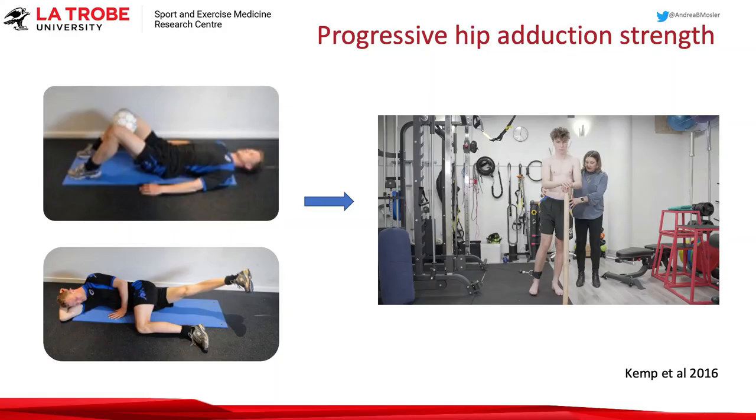Then quickly progressing on to isotonic type actions. It's surprisingly hard to lift your leg against gravity in sidelying, so often you'll find this will be enough load in the early stages. But it's really easy to add an ankle weight. A little tip and trick: if they've got a long sock and they don't have one of those sand-based ankle weights, just put a dumbbell in the sock and you can progress really nicely through the weight. That gives it a long lever, so it's actually quite hard — even one kilo in the sock can increase the loading quite nicely.